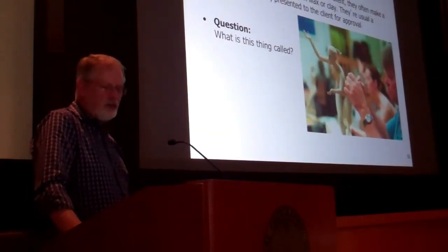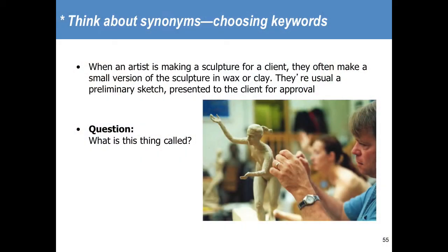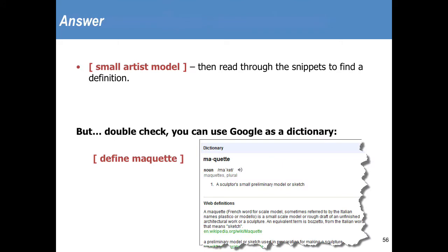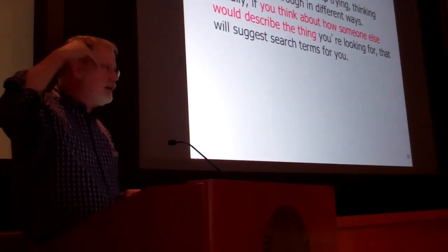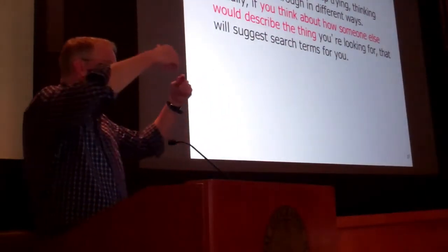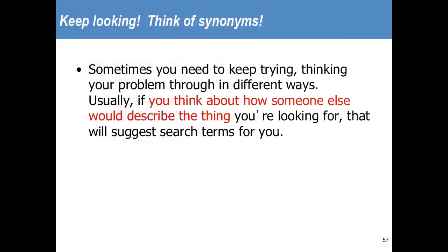For example, there's a small sculpture that an artist will often make for a client to look at — what's it called? I want to find the specific term, not just say 'small dummy model.' What you can do is search for it and discover the term. Keep as a strategy: we are searching not how you would talk about it. The web is composed mostly of pages written by somebody else, and the language you use determines the kinds of results you get. That's why specific terms like 'maquette' are important — because then you know you're only going to get artistic models.